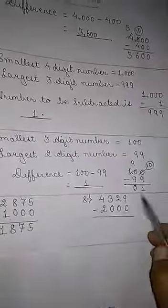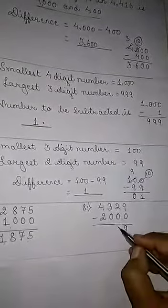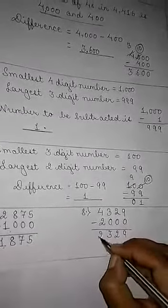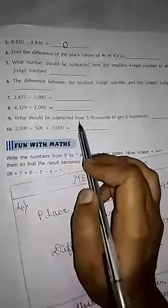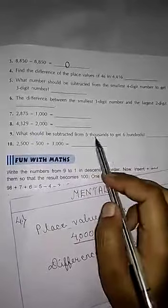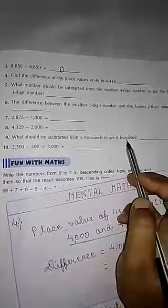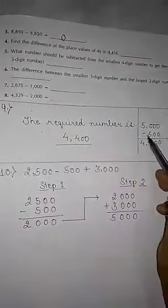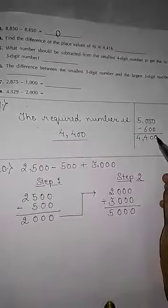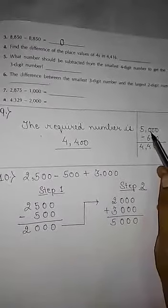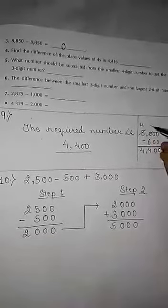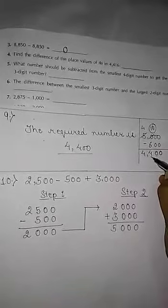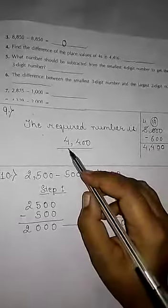Eighth question: what should be subtracted from 5,000 to get 600? You have to subtract a number from 5,000 to get 600. The required number is 5,000 minus 600. 0 minus 0 is 0; again 0 minus 0 is 0. Since 0 is smaller than 6, carry 1 from 5 — it becomes 4, and here 10. 10 minus 6 is 4; and 4 is remaining. Our required number is 4,400.